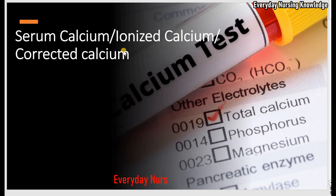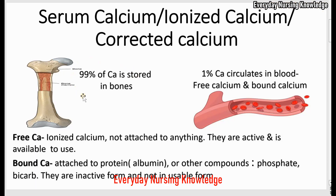Welcome to everyday nursing knowledge lectures. Today we will learn about serum calcium, ionized calcium, and corrected calcium. 99% of our body calcium is stored in bones, and a very small amount — the remaining 1% — circulates in blood. That calcium is called serum calcium, and it circulates in two different forms: free calcium and bound calcium.